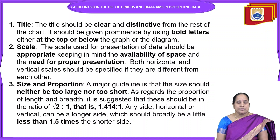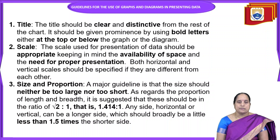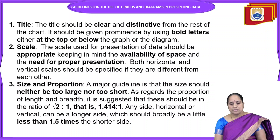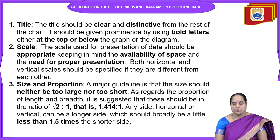What type of data are we using? For a graph, we should specify the scale — how many units on the x-axis and how many units on the y-axis. Each unit must be specified. Both horizontal and vertical scales should be specified if they are different from each other, and also when they are the same. The third guideline is size and proportion. The size should be neither too large nor too small. The ratio of length to breadth is suggested to be root 2 to 1, meaning the longer side should broadly be a little less than 1.5 times the shorter side.